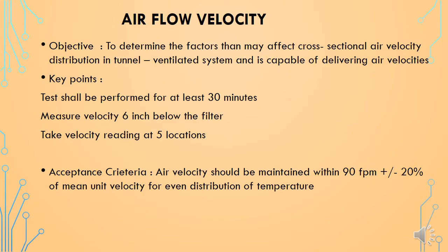Now we will see the first test: air velocity check. The purpose or objective of this test is to check the factors that affect cross-sectional air velocity distribution in tunnel ventilated systems. This air velocity check is done to ensure maintenance of continuous laminarity of HEPA filters installed in the tunnel or oven. To perform this test, we need a hot air anemometer.